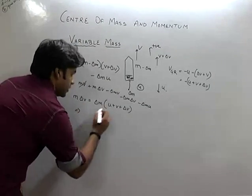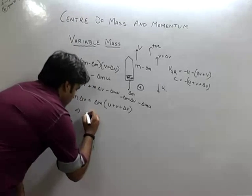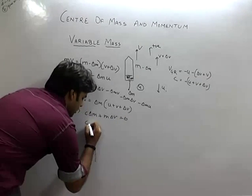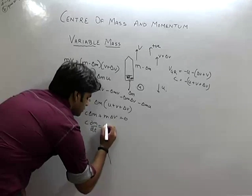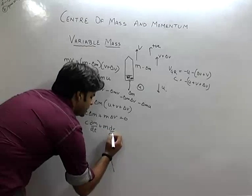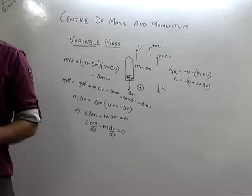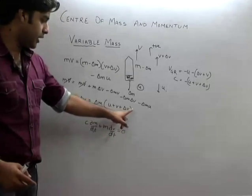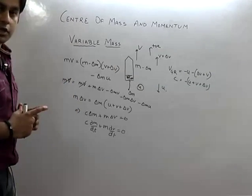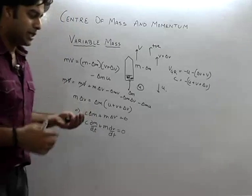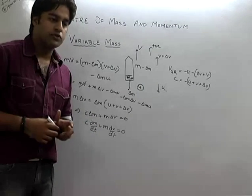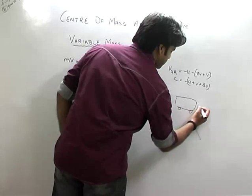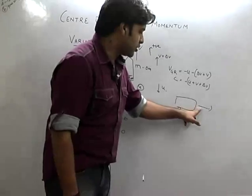This implies C·delta M plus M·delta V equals zero. This is the case when external force is zero. In your booklet, change in momentum is used because external force is zero. For example, consider a train moving while rain is falling on it — mass is increasing. So mass can increase as well.